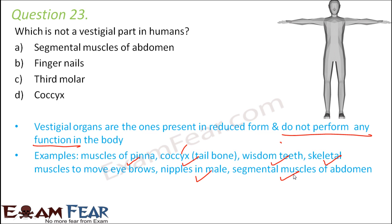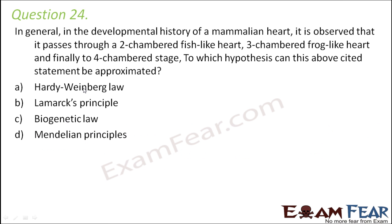The question asks which is not a vestigial part. Segmental muscles of the abdomen are vestigial. Fingernails are not vestigial — they are present and also serve a purpose. The third molar is the wisdom teeth, also vestigial. The coccyx (tailbone) is also vestigial and present in reduced form.